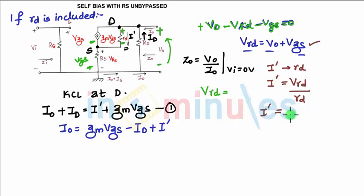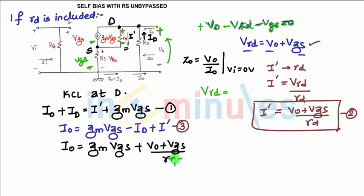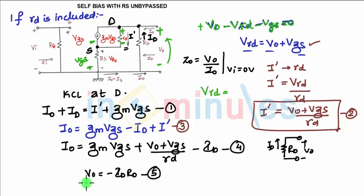So i_dash equals (vo plus vgs) divided by rd. Substituting into equation three gives io equals gm·vgs plus (vo plus vgs) divided by rd minus id — call this equation four. Also, vo equals minus id times Rd (capital Rd), because the current id flows upward through Rd, so going in the opposite direction gives a negative sign — this is equation five. Substituting equation five into equation four gives the combined expression.